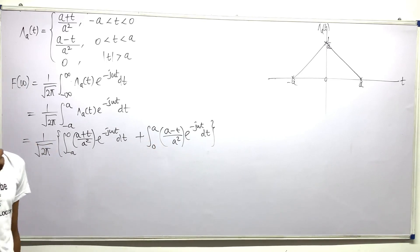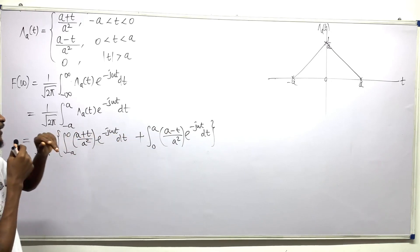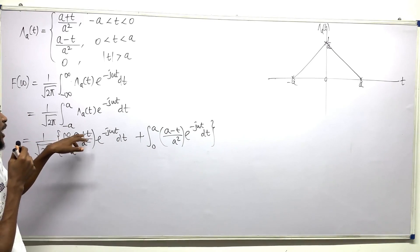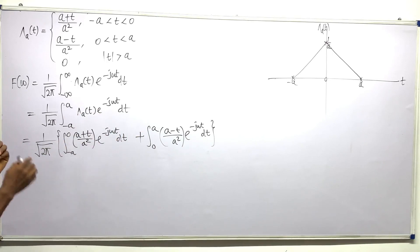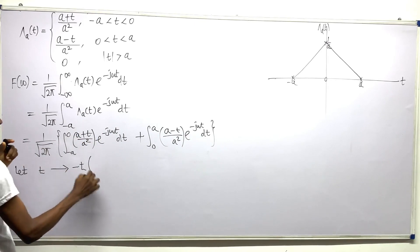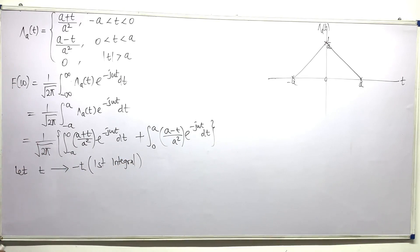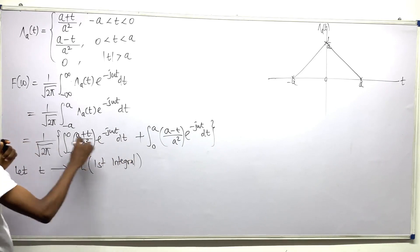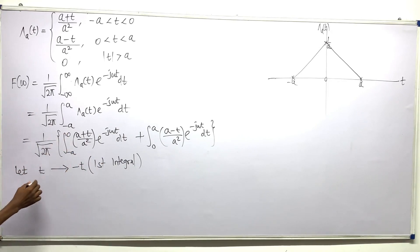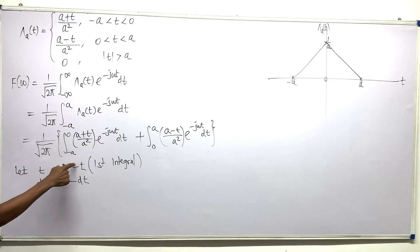These two integrals would require integration by parts, but there's a technique. If I can make the first integral also have (a − t) instead of (a + t), the two integrals would look the same. So in the first integral only, let t become minus t. When differentiating, dt becomes negative dt.